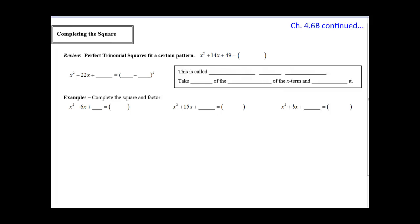From review: perfect trinomial squares fit into a certain pattern. For instance, x squared plus 14x plus 49 — this trinomial should break down into two factors. If you notice, x squared and 49 are perfect squares. So the square root is x plus 7. We can break this down into two factors of x plus 7.